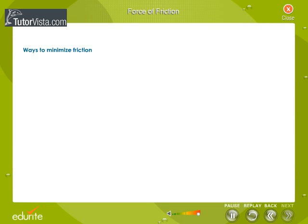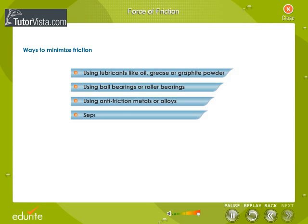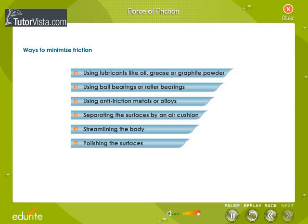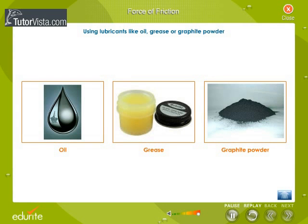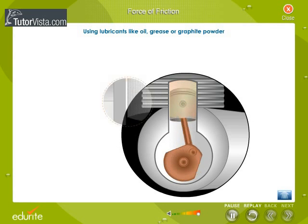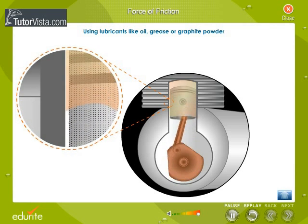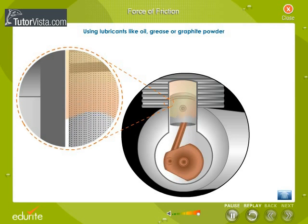The force of friction between any two surfaces can be minimized by several methods. Using lubricants like oil, grease or graphite powder: lubricants form a thin film between the moving parts and fill the tiny pores and depressions on the surfaces, making the surfaces smooth and reducing friction.